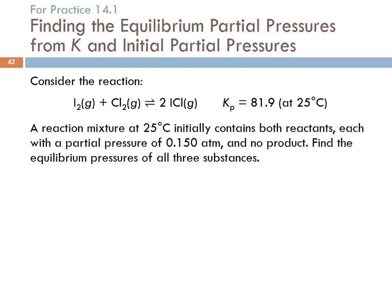Let's do one with partial pressures. Remember, if the reaction is all in the gas phase, we can use partial pressures and the equilibrium constant with respect to pressure in the same way that we used concentrations. Here we have a reaction mixture at 25 degrees, initially containing both reactants each at a partial pressure of 0.150 atmospheres, with no product. Find the equilibrium pressures of all three substances; we're given Kp.